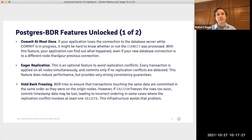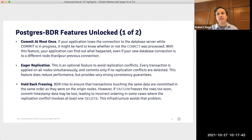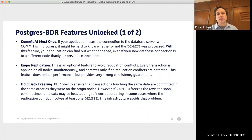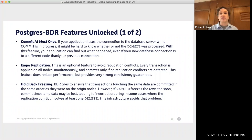There are five features unlocked by these server capabilities. The first is called Commit at Most Once. A general problem is that if you send a commit command and then lose the database connection before getting a response, it's impossible to know what really happened — whether the commit never reached the database, couldn't be processed, or succeeded but the response was lost. With this feature, your application can find out whether the previous transaction was successfully committed, even if your new connection is to a different node in the cluster.